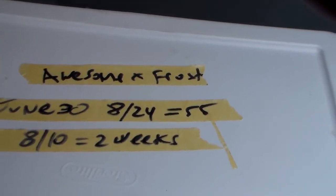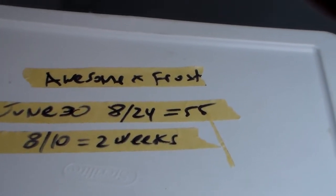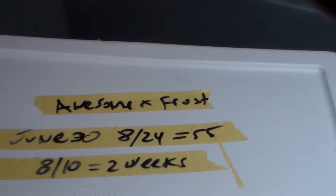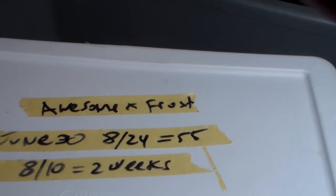That's the leopard pied is the awesome and frosty is my orange dream het pied. Both of those snakes, by the way, came from Justin K., Justin Kubica, who is just an awesome guy and makes some fantastic animals. So, I've written down today's date, June 30th is 2016. And then 55 days from now is 824 and two weeks out is 810.